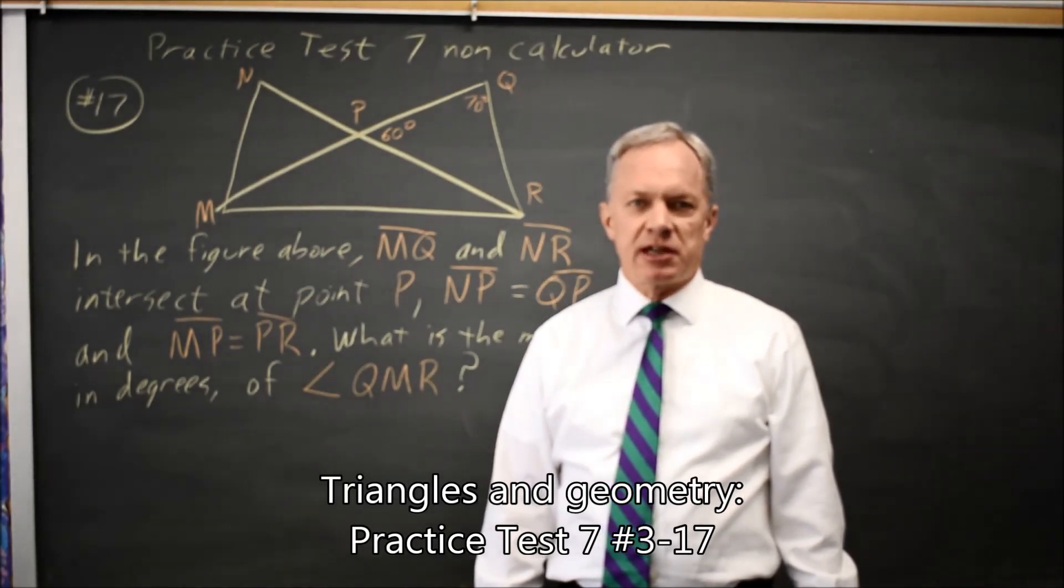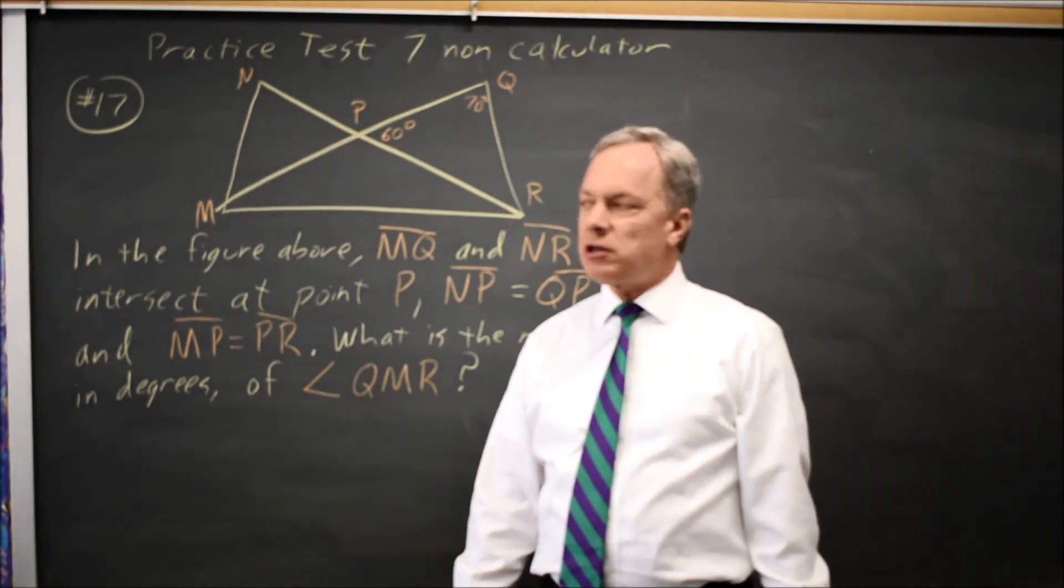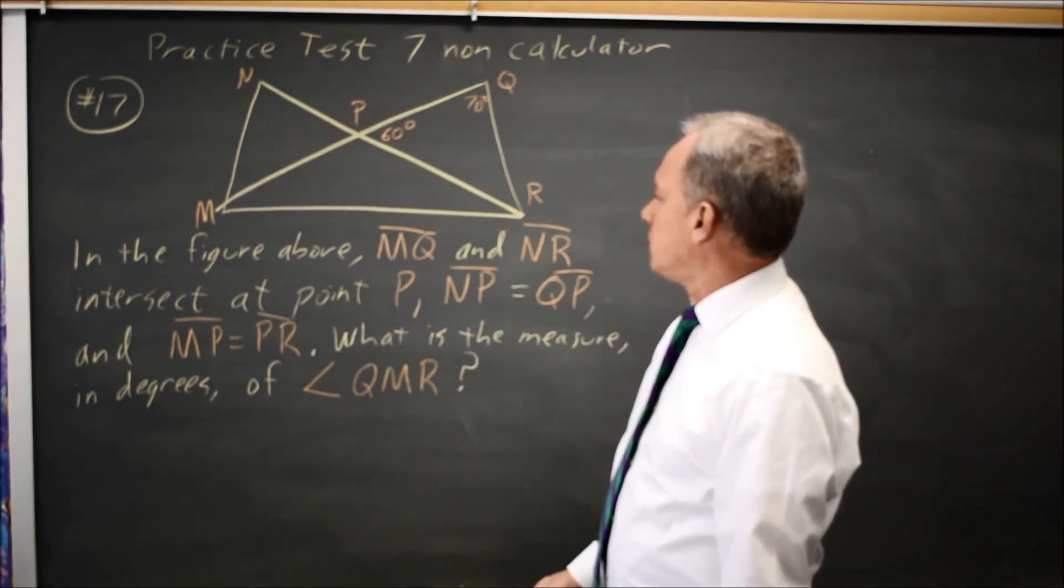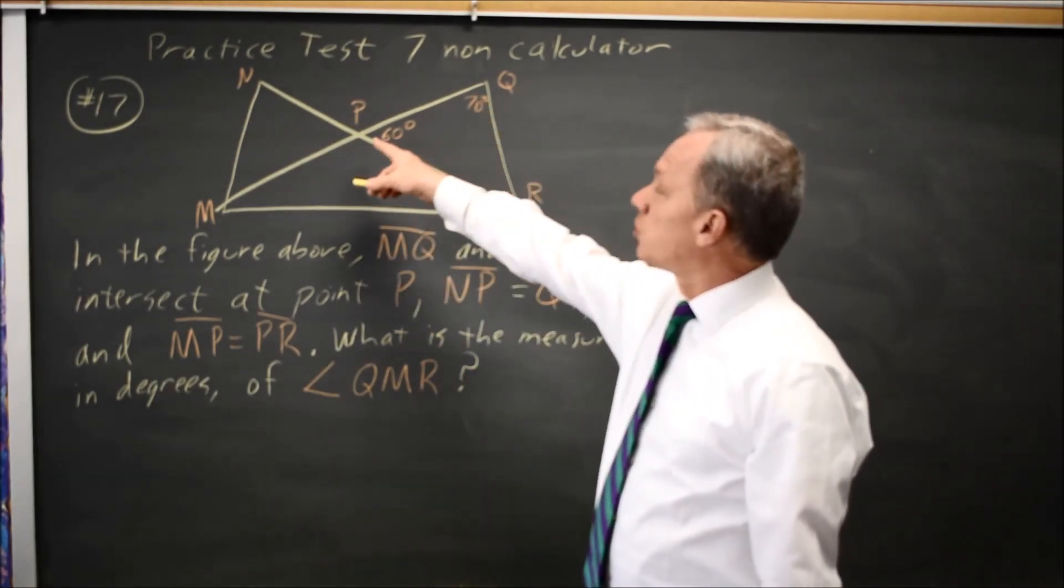This is SAT Test 7, non-calculator question number 17. College Board gives us a diagram and says MQ and NR intersect at point P.